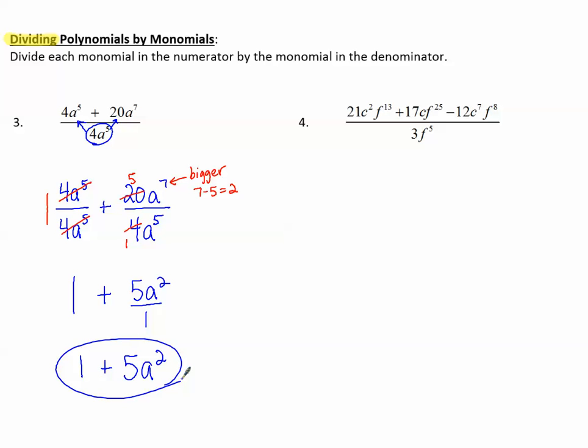Take a look at number 4. It's a bit more complicated, but it's the same idea. Take each term of the numerator and divide it by that denominator.